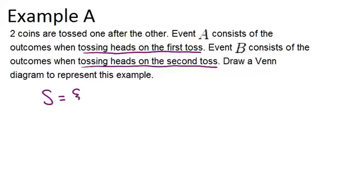In this case, we could get heads on the first toss and heads on the second toss, or heads on the first toss and tails on the second toss. Those are the only two ways that we could get heads on the first toss. We could also get tails on the first toss and heads on the second, or tails on both.